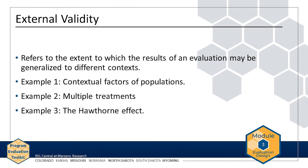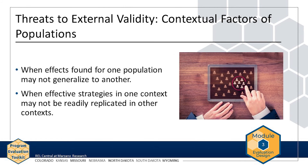Next, let's look at contextual factors, multiple treatments, and the Hawthorne effect as common threats to external validity. Perhaps the most common way in which an evaluation lacks external validity, or generalizability, is different contextual factors between the sample in the evaluation and a population to which one wants to generalize.